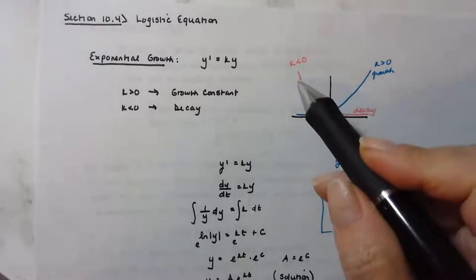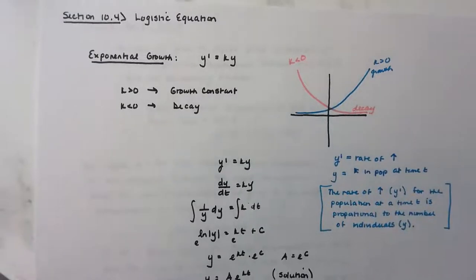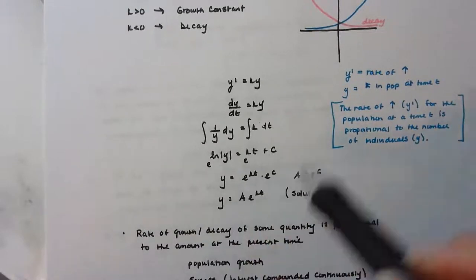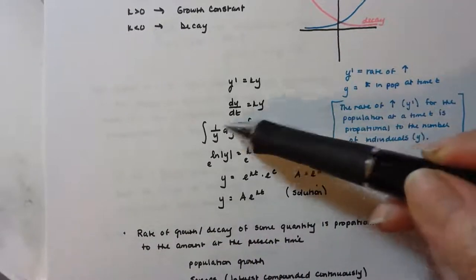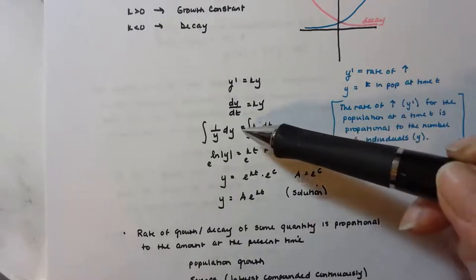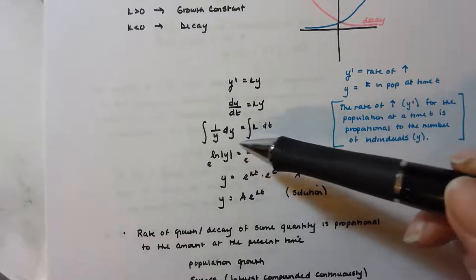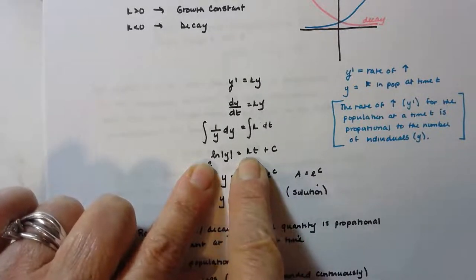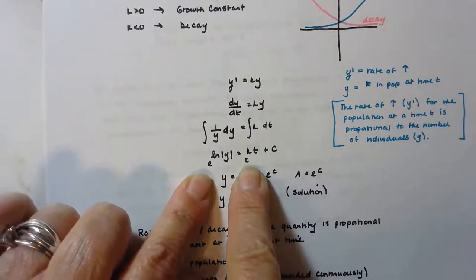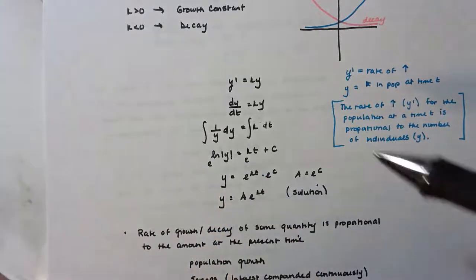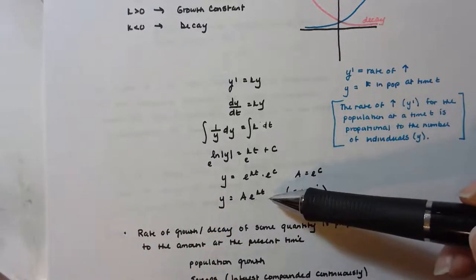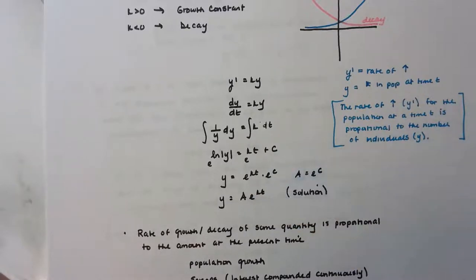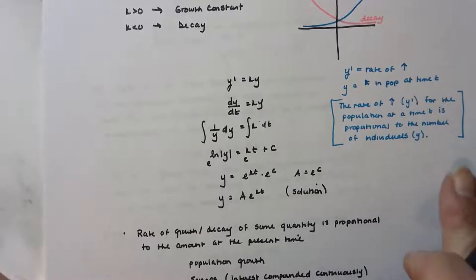Here's the growth curve and the decay curve. To solve this differential equation, you separate the variables and integrate both sides. You get ln|y| = kt + C, then exponentiate both sides to eliminate the natural log. The solution is y = Ae^(kt).